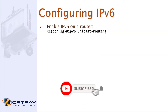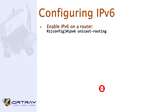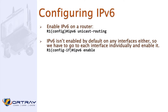Configuring IPv6: first, IPv6 is not enabled by default. You must enable IPv6 unicast routing on the router where you want to use it. IPv6 isn't enabled by default on any interface either, so you have to go to each interface individually and enable it.